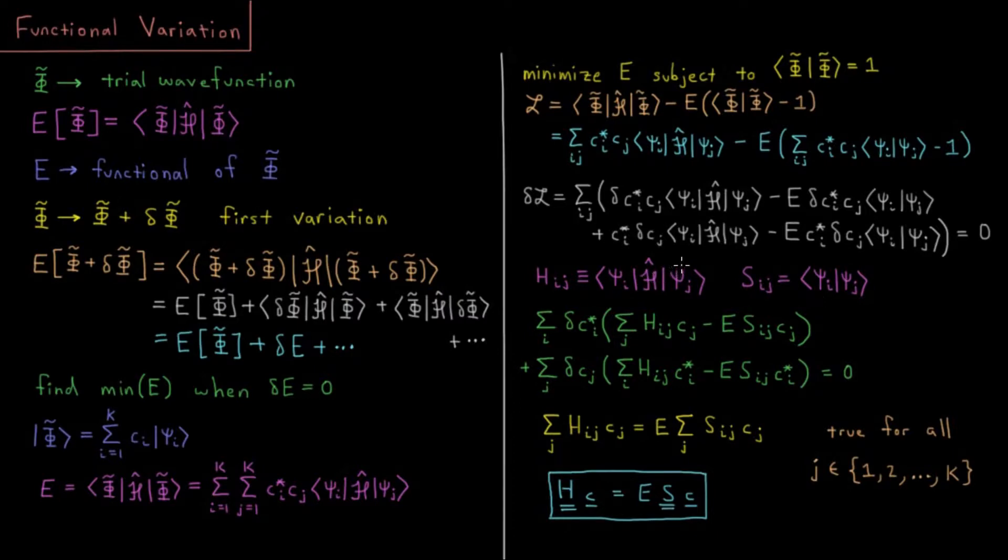The result is that in order for this entire term to be equal to zero, each of them individually needs to be equal to zero. Our coefficients, or the variation in the coefficients, isn't necessarily going to be equal to zero. So what needs to be equal to zero is the terms within the parentheses. These terms are going to be equal to zero if the left term equals the right term. They will cancel each other out and thus give us zero.